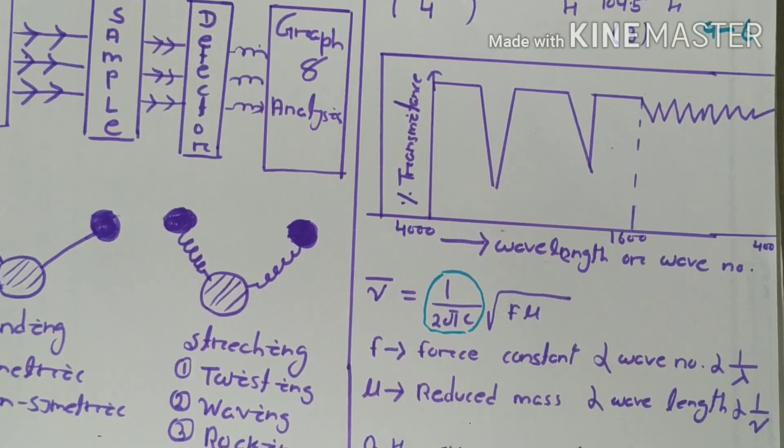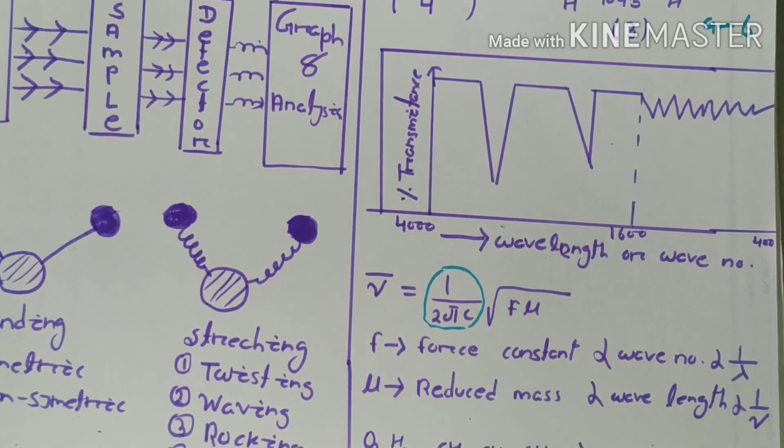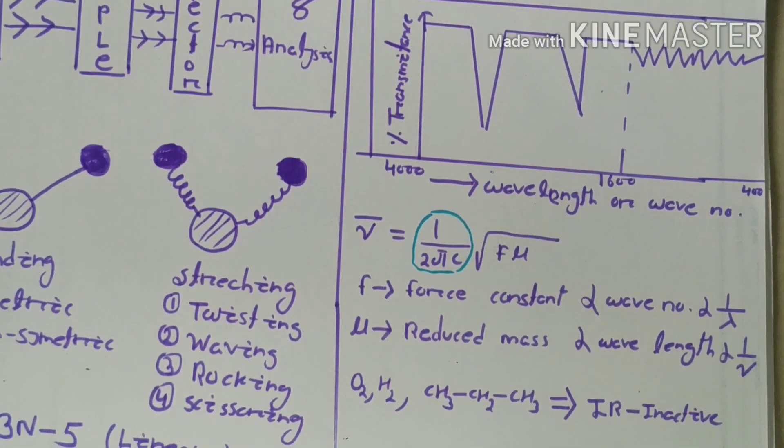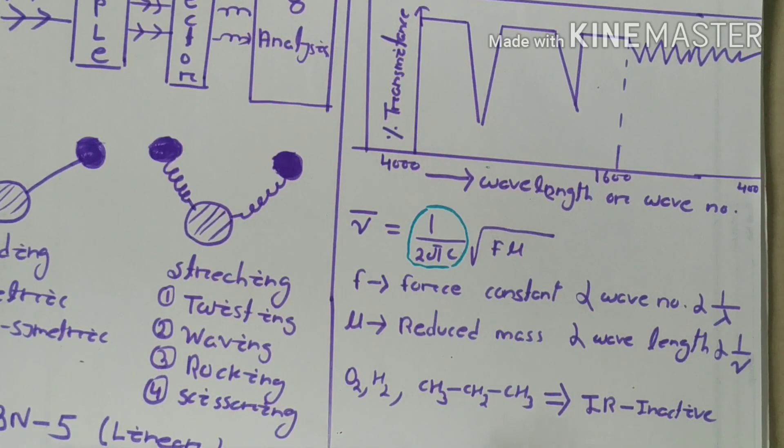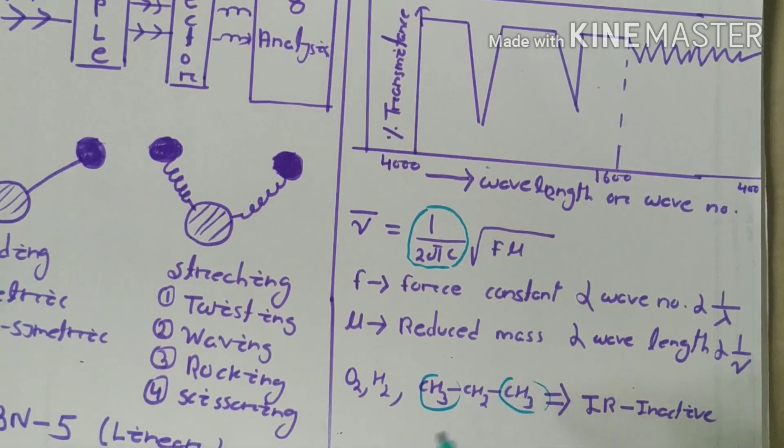Some molecules are IR active and some are IR inactive. Homodiatomic molecules like O2 and S2 are IR inactive. Symmetric molecules like CH3-CH2-CH3 which has the same groups on both sides are also said to be IR inactive.